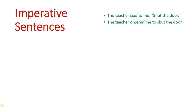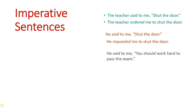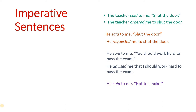Next: imperative sentence — a request or a command. Teacher said to me, 'Shut the door.' Teacher ordered me to shut the door. He said to me, 'Shut the door.' He requested me to shut the door. He said to me, 'You should work hard to pass the exam.' He advised me that I should work hard to pass the exam. He said to me not to smoke. He forbade me to smoke.